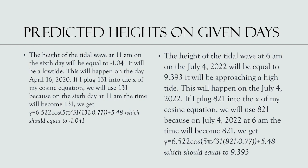The height of the tidal wave at 6 a.m. on July 4, 2022 will equal 9.393 — it will be approaching a high tide. Plugging x = 821 into the cosine equation (821 represents July 4, 2022 at 6 a.m.), we get y = 6.522 · cos((5π/31)(821 − 0.77)) + 5.48 = 9.393.